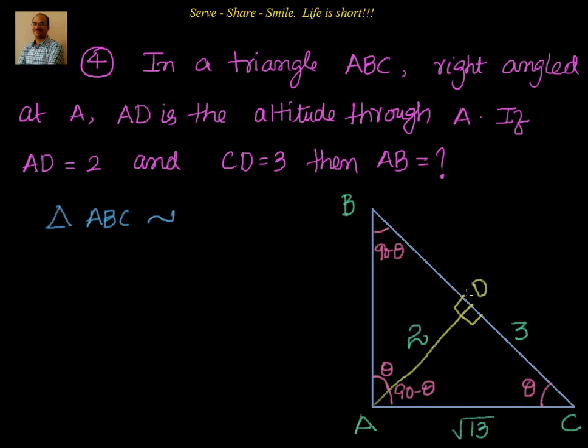If I look at ABC, A is going to be 90 to 90 minus theta. So in ADC, 90 to 90 minus theta is DA, and the left out is C.